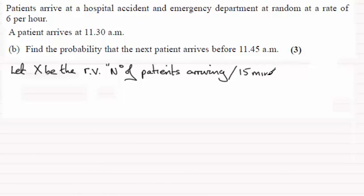15 minutes then is quarter of an hour so we know then that our random variable X is distributed as a Poisson and since we had six in an hour for a quarter of an hour that's got to be 1.5 patients we're expecting.